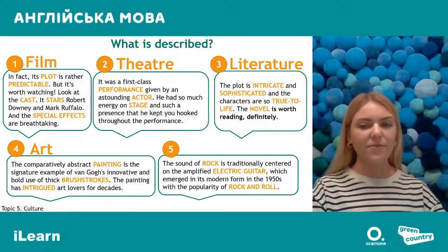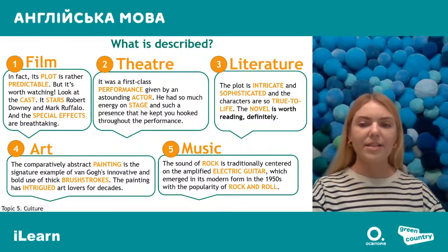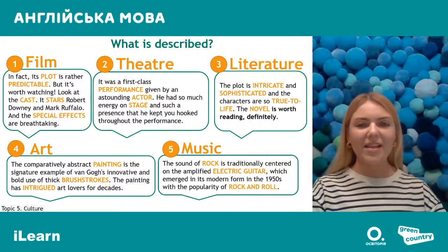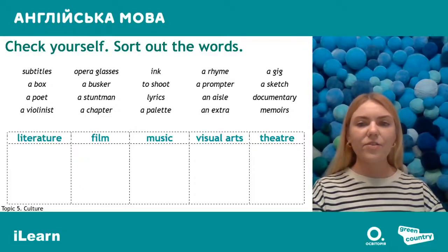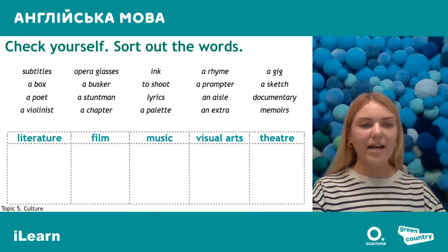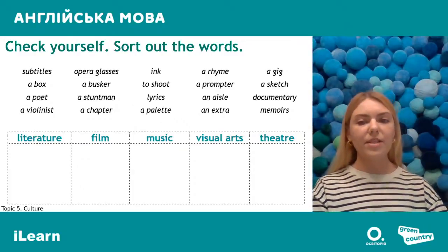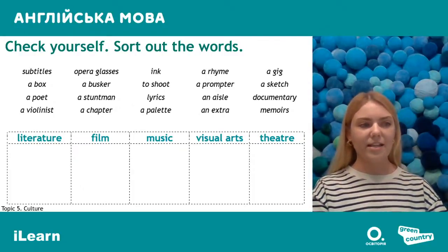And number five is obviously about music, because we can see words like 'rock', 'electric guitar', 'rock and roll'. Now let's look at some more words which can be connected to culture. You can see a lot of words on this slide. Some are connected to literature, some are about films, music, visual arts or theater. Let's look through these words one by one.